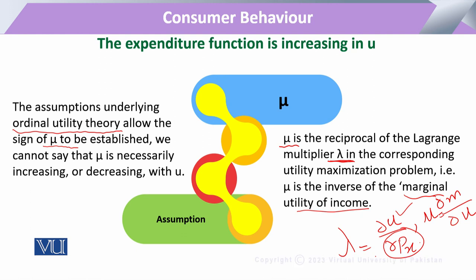So we cannot say that mu is either necessarily increasing or decreasing with utility, but it will be related to the aspect shown by that particular ordinal utility function. It can be that whenever we want to increase utility for given prices — because if prices are not changing, then yes — the related expenditure function will increase.